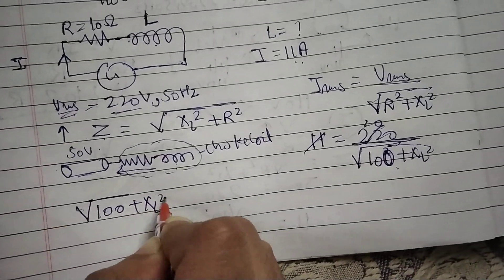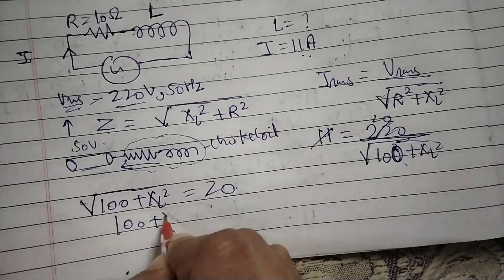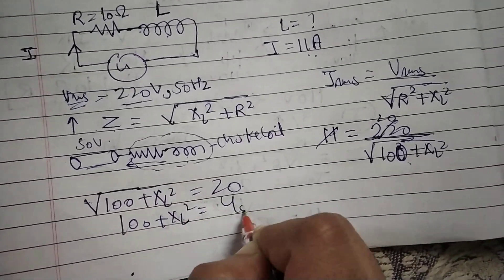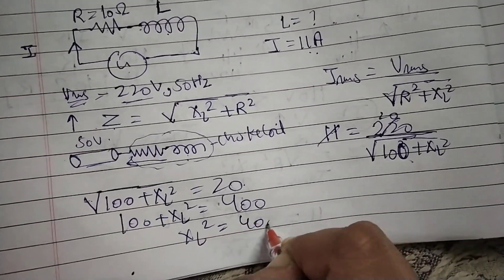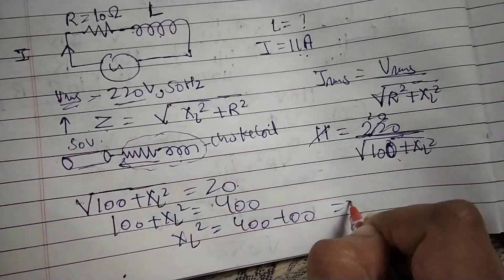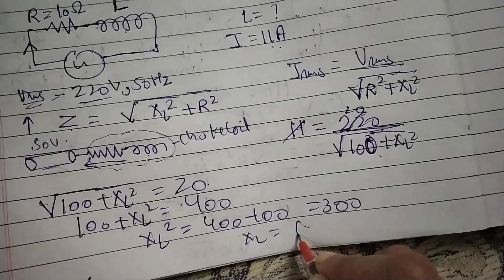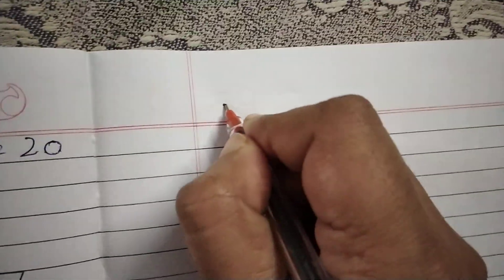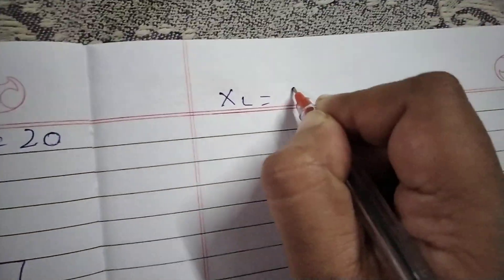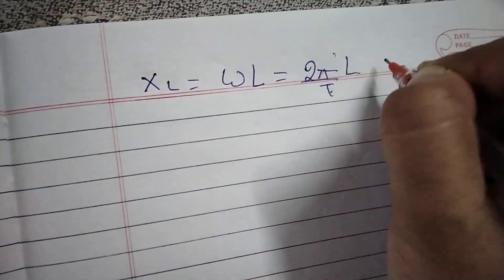Rearranging: the square root of (100 + XL²) = 20. Squaring both sides: 100 + XL² = 400. So XL² = 400 − 100 = 300. Therefore XL = 10√3 ohms. Now we know XL = ωL = 2πfL.